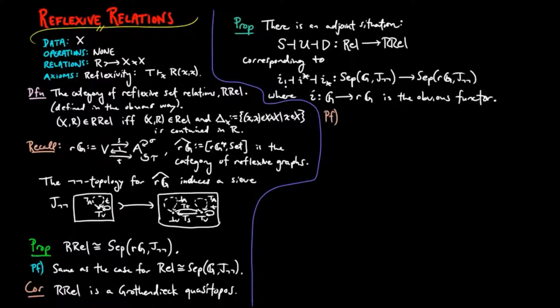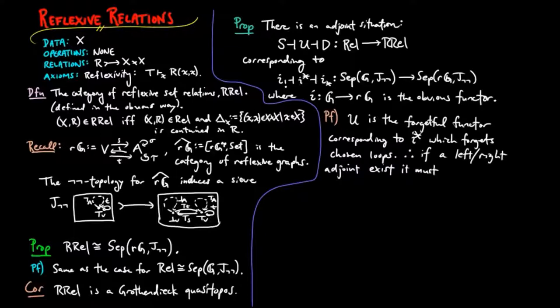For the proof, we have that the forgetful functor is equivalent to the I-restriction functor since it forgets the distinguished loops in the reflexive graph. Thus, if a left or right adjoint exists, then it must correspond to the I-extension and I-coextension functors with restricted domain and codomain.